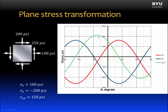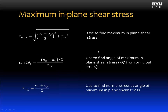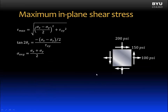The tau x prime y prime line also has a sinusoidal pattern, oscillating an equal distance above and below the horizontal axis. The maximum point of this line is called the maximum in-plane shear stress, and the rotation angle to reach it is called theta sub s. We can calculate the maximum in-plane shear stress directly using an equation with variables sigma x, sigma y, and tau xy. We calculate theta s using a separate equation. When in-plane shear stress is at a maximum, both sigma x prime and sigma y prime are equal to each other and can be calculated as the average of sigma x and sigma y.